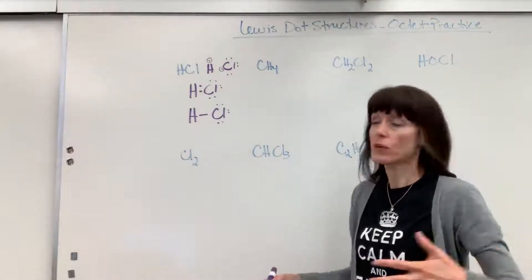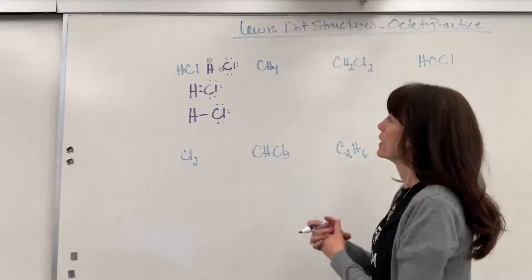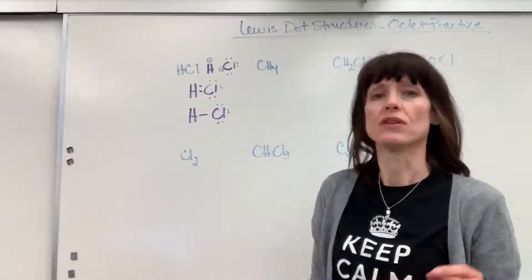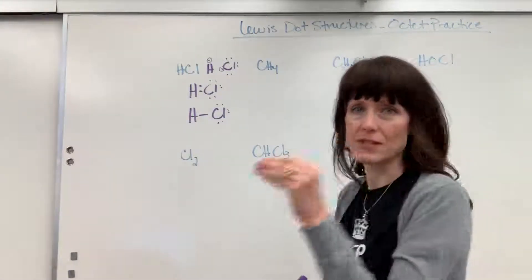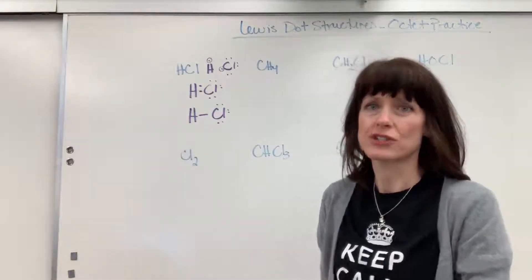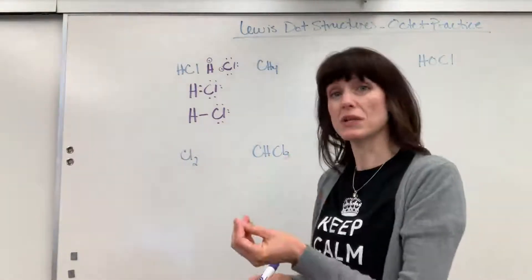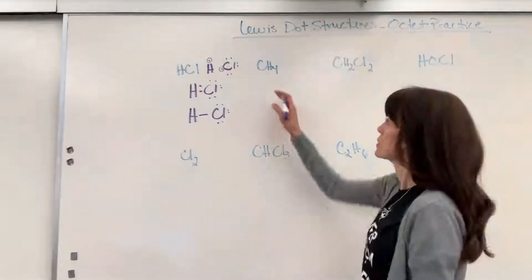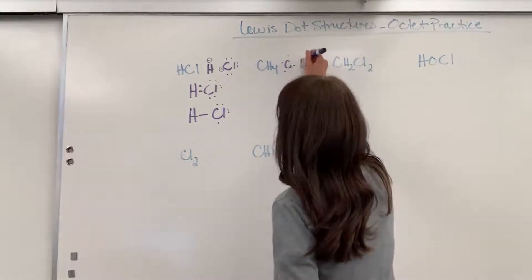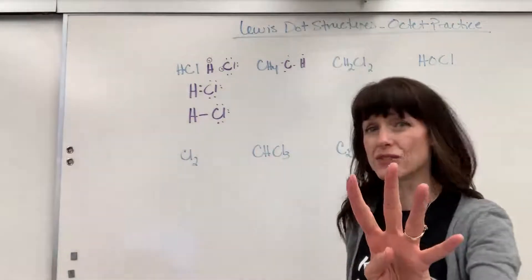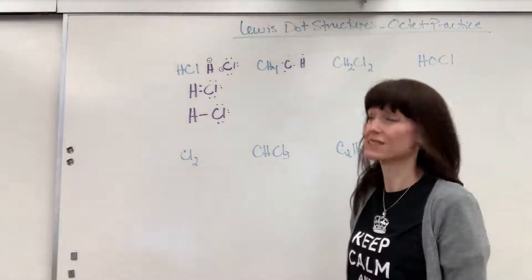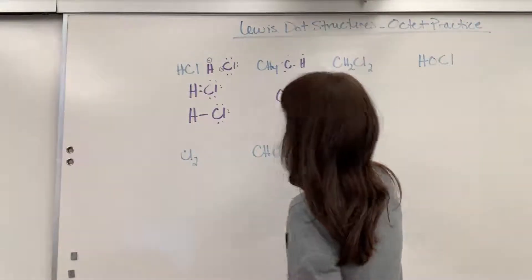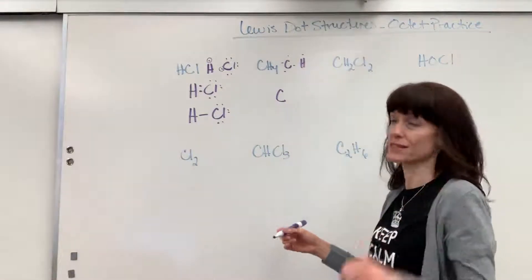Let's look at methane. When you have more than two atoms, choose the atom with the fewest valence electrons to become the central atom, with the exception of hydrogen. Hydrogen will always be a substituent — the atom attached to the central atom. Carbon has four valence electrons and there are four hydrogens, each with one valence electron. So carbon will be our central atom.